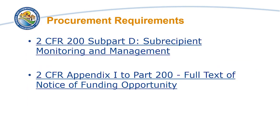Subrecipient selection and related requirements are located in the Uniform Administrative Requirements at 2 CFR Part 200 Subpart D. Requirements for Notice of Funding Availability are located in the Uniform Administrative Requirements at 2 CFR Part 200 Appendix 1, both of which are hyperlinked here.